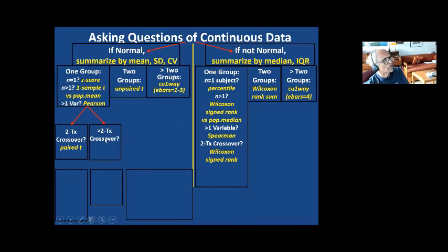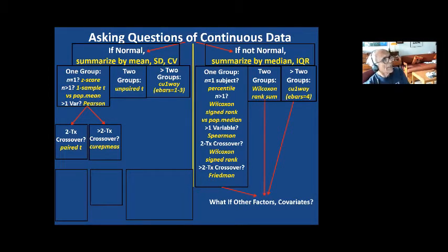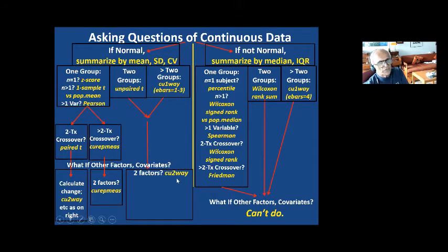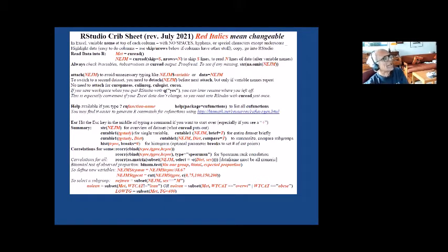If you have more than two treatments and a crossover, you do RepMess. For non-normal data, you do the Friedman test. That is all you can do with non-normally distributed data — anything more, with additional factors or covariates, I can't help you. But with normal data, if you have other factors and covariates with a crossover and more than two treatments, you do RepMess. If you have two groups or more than two groups and additional factors, you do two-way or ANCOVA one-way, ANCOVA two-way, and so on.